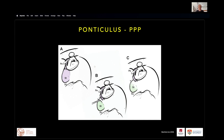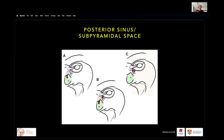Let's move on to the superior retrotympanum. Here are lovely diagrams from Daniele talking about the ponticulus — we teach our registrars and residents to remember this with the three Ps: the promontory, the pyramid, and the structure between the two forming the ponticulus, Latin for bridge. We can see bridge and absent conformations demonstrated. Another important space medial to the pyramid is the subpyramidal space, which can communicate with the posterior sinus — that space medial to the stapedius tendon, posterior to the crura of the stapes.